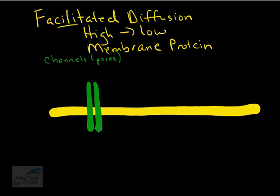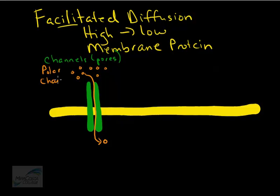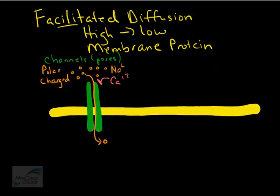Channels basically form a barrel through the membrane that allows specific substances — and specificity is an important concept — to move down their concentration gradient and cross the membrane. These would be polar or charged molecules like ions, glucose, or amino acids. For example, if these are sodium ions, calcium ions wouldn't be able to pass through the same channel — they wouldn't fit. This is a selective transport of a particular substance through a specific channel.